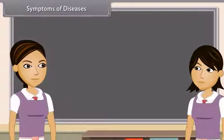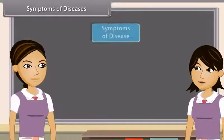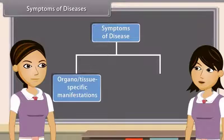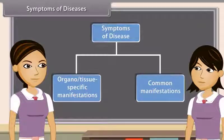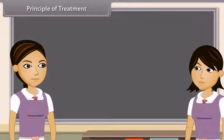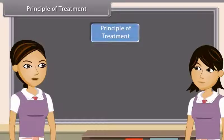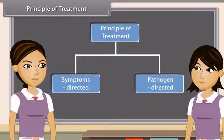Symptoms of diseases are of two types: organo or tissue specific manifestations, and common manifestations. The principles of treatment of various diseases are symptom directed and pathogen directed.